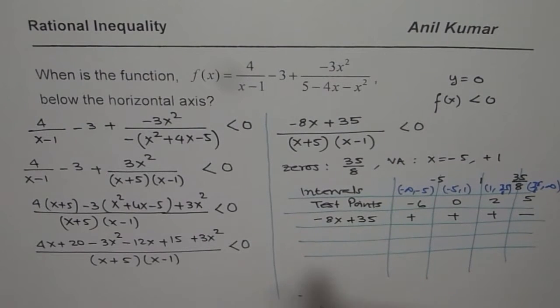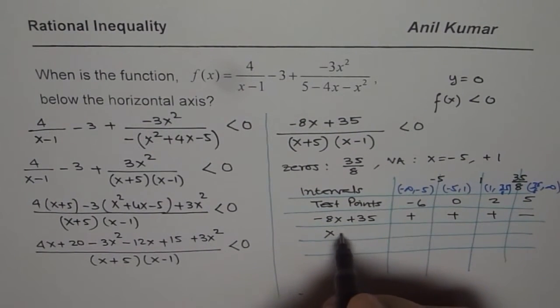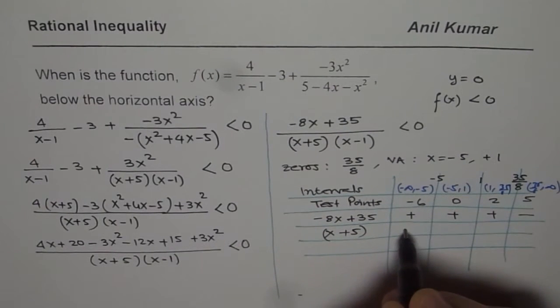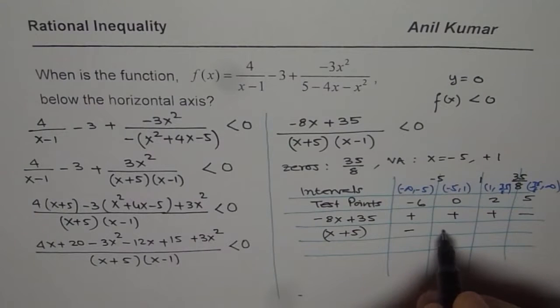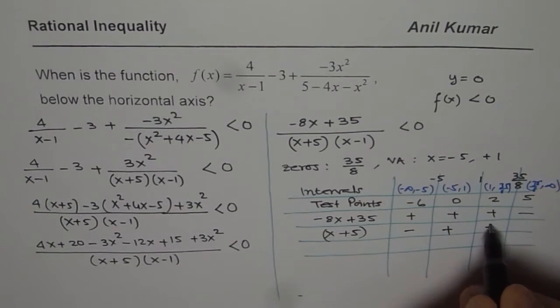For the factor, which is x plus 5, if I substitute minus 6, I get negative. For 0, I get positive. For 2 and 5, I get a positive value.